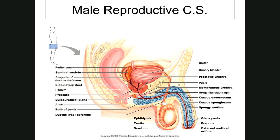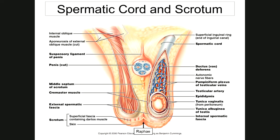The spermatic cord consists of six components: the ductus deferens, testicular arteries, testicular veins, autonomic nerves, lymphatic vessels, and the cremaster muscle, which covers everything. You can see the cremaster muscle on the left side of the picture covering the spermatic cord structures.